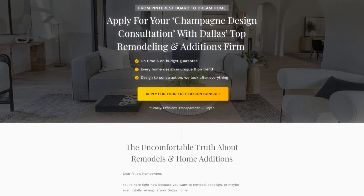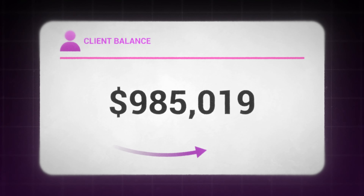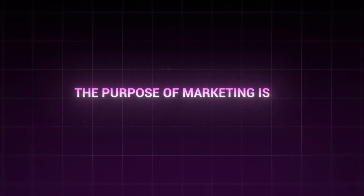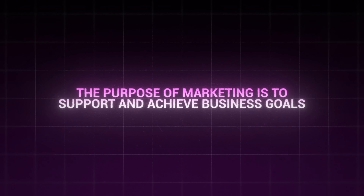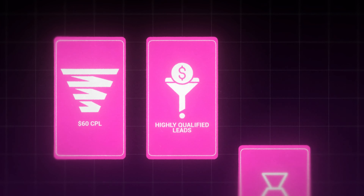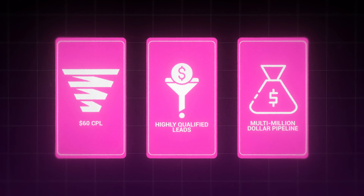The third landing page is for a luxury builder and home remodeler out of Dallas, Texas. The goal of this campaign was to unlock and diversify into a new traffic channel with meta ads. They didn't want a crazy high volume of leads because this was founder-led sales — we wanted to focus on qualified leads. The result was $60 CPLs, highly qualified leads, and we built a multimillion-dollar pipeline in just the first 30 days.